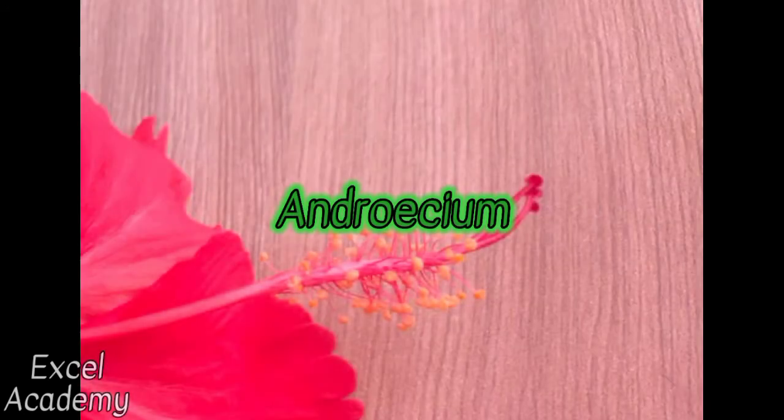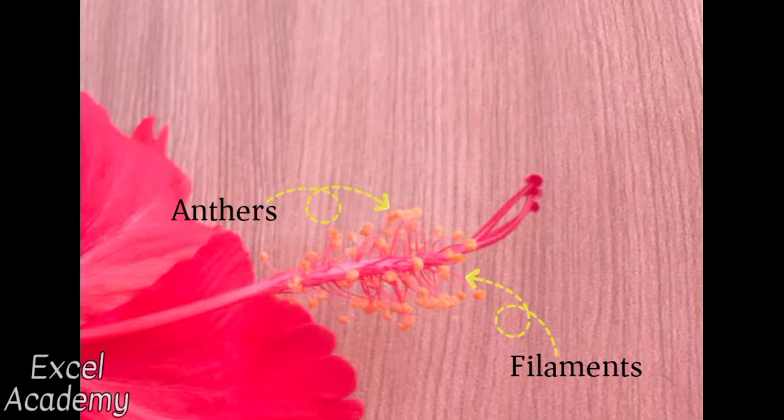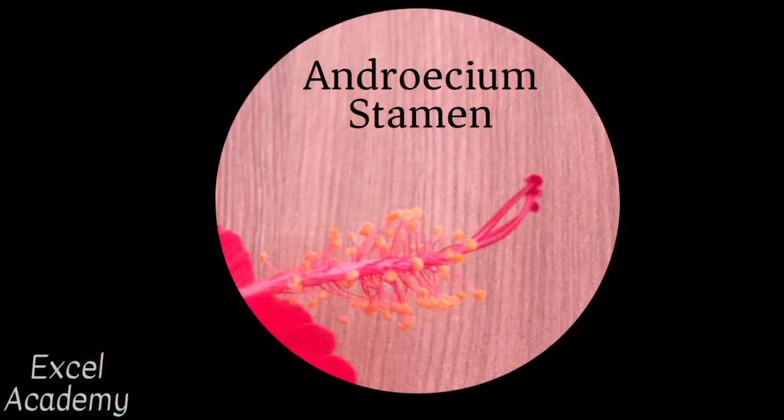Androecium. The male part of the flower has two parts: the anthers and the filaments. The anther is responsible for the production of pollen. The filament is the stalk that holds the anther and attaches it to the flower. The androecium, or the male part of the flower, is also known as stamen.